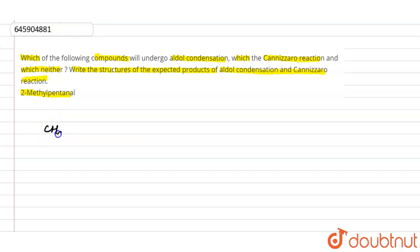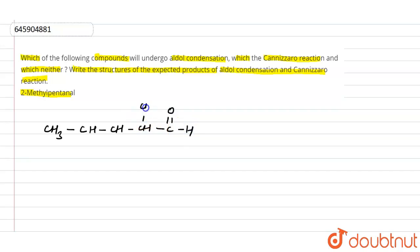First, let us see what 2-methyl pentanal is. In pentanal we have five carbons: CH3, then a chain of five carbons — one, two, three, four — and the fifth carbon is converted into an aldehyde. On the second carbon we have a CH3 group. This is your 2-methyl pentanal.